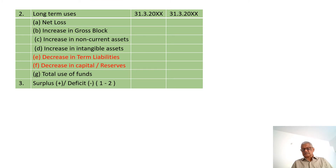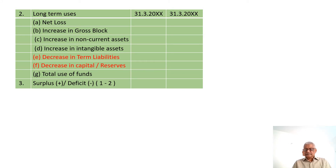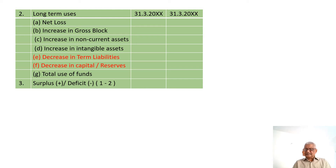Long-term uses, again between two financial years, include: net loss (if instead of profit), any increase in gross block, any increase in non-current assets, any increase in intangible assets, any decrease in term liabilities, or any decrease in capital or reserves. The sum total gives total uses of funds.